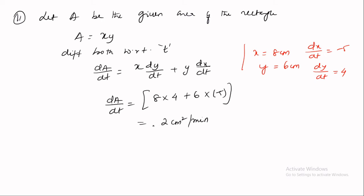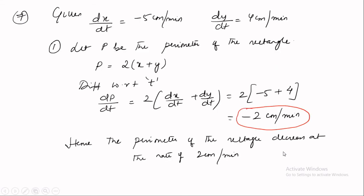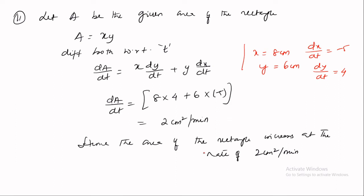The answer is positive, so hence the area of the rectangle increases at the rate of 2 cm² per minute. Note: when the answer comes in negative, write the word 'decreases' and state the magnitude as positive — you don't write the minus sign separately. That's all about Question 7.